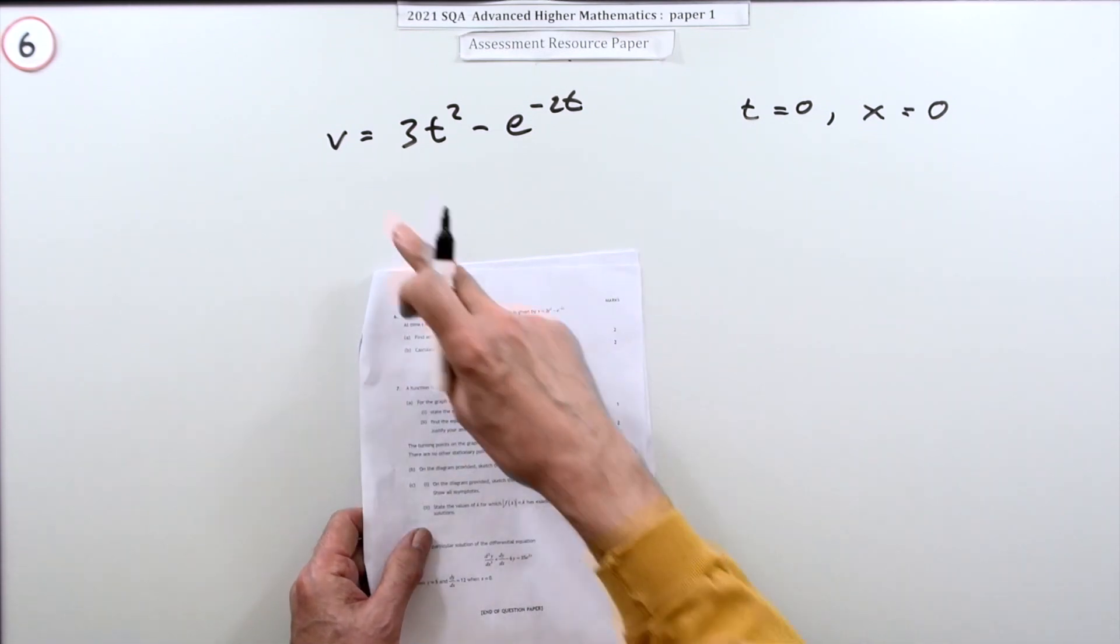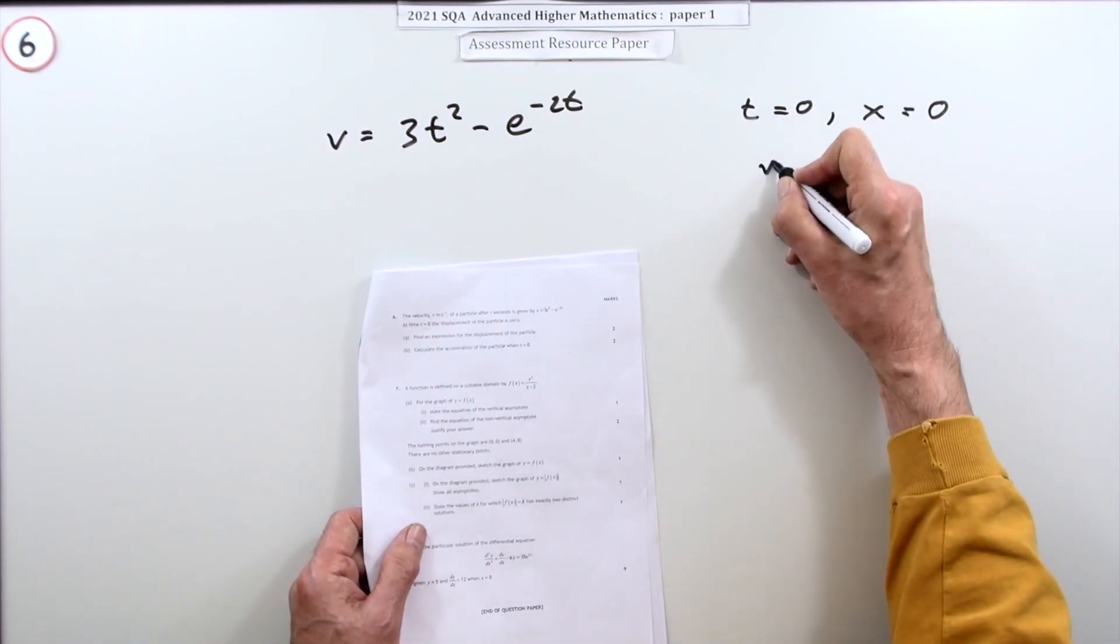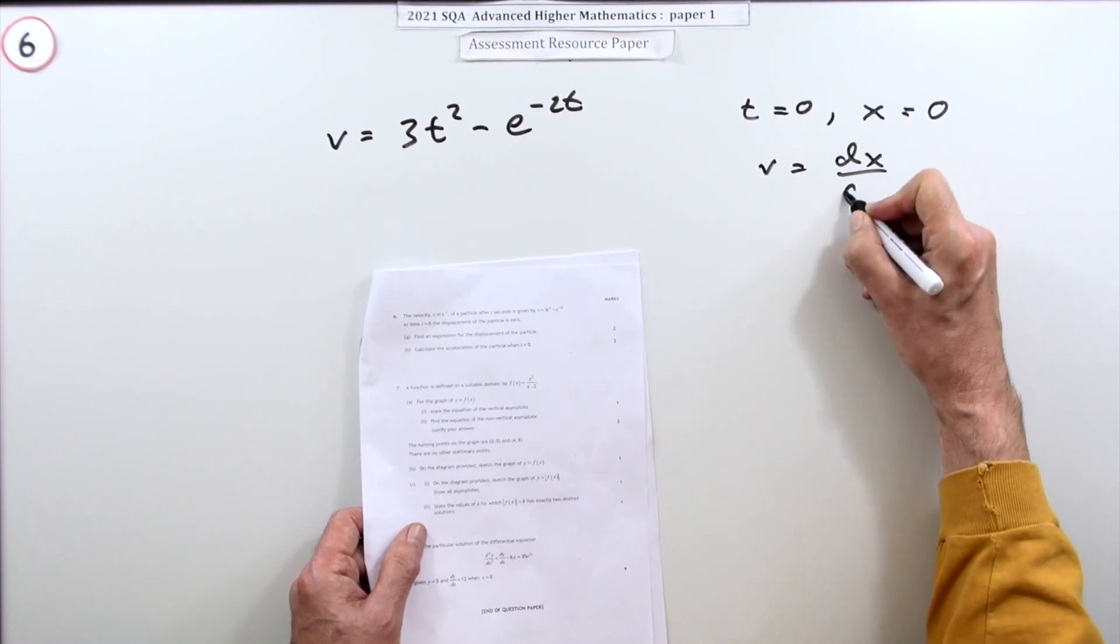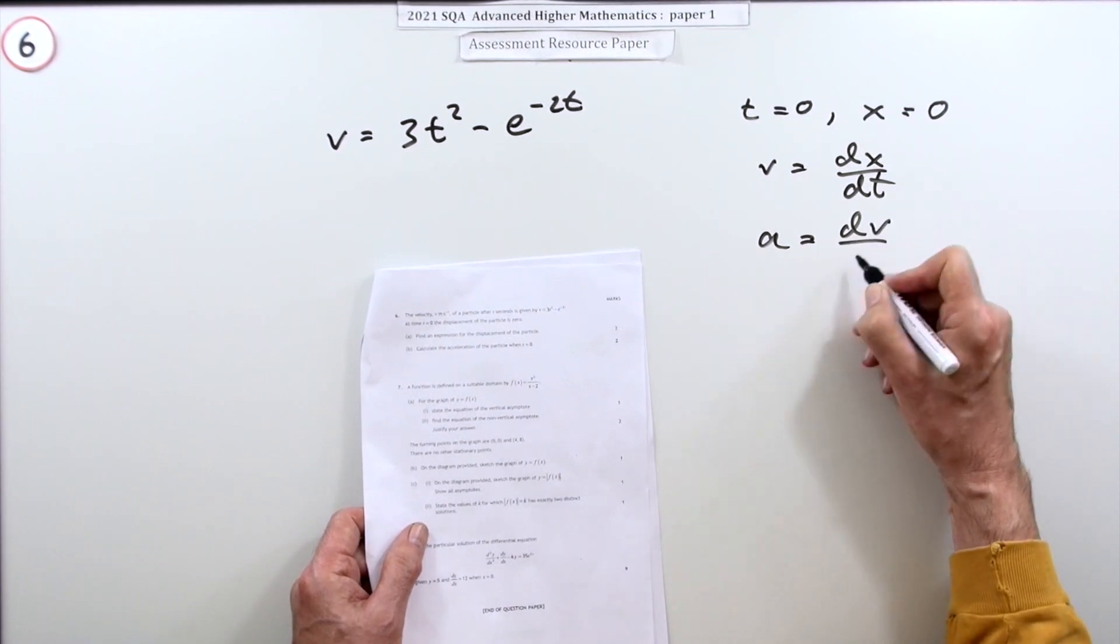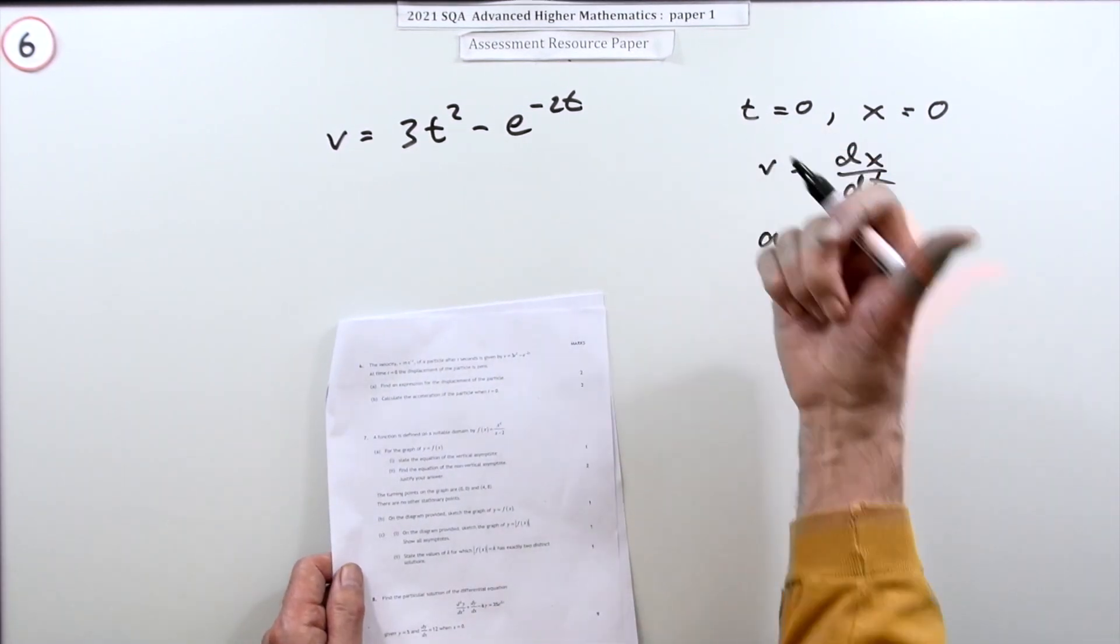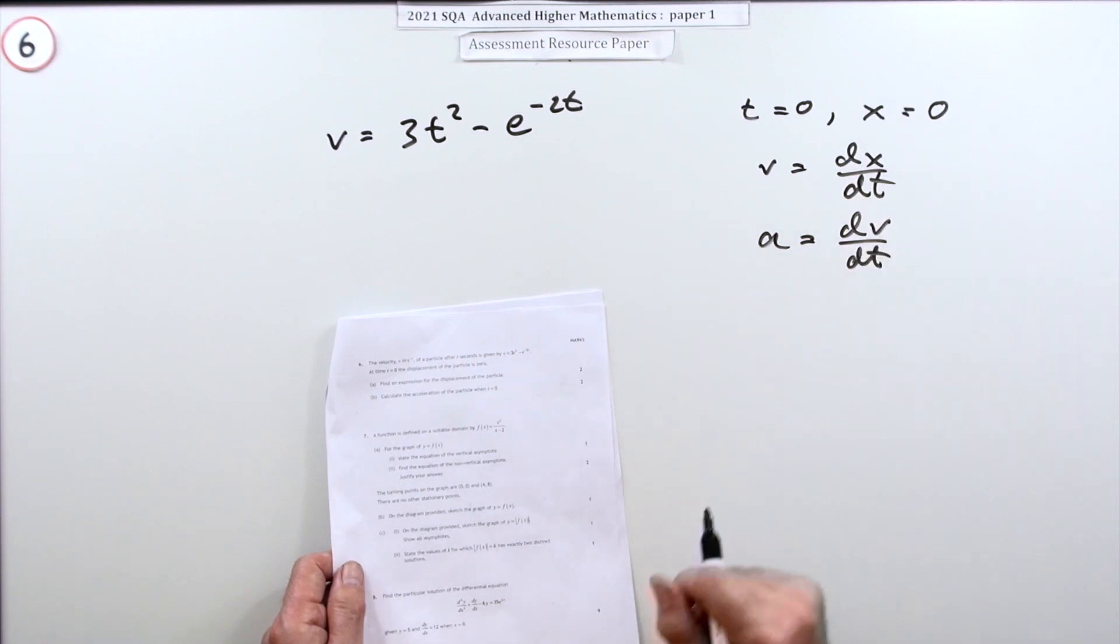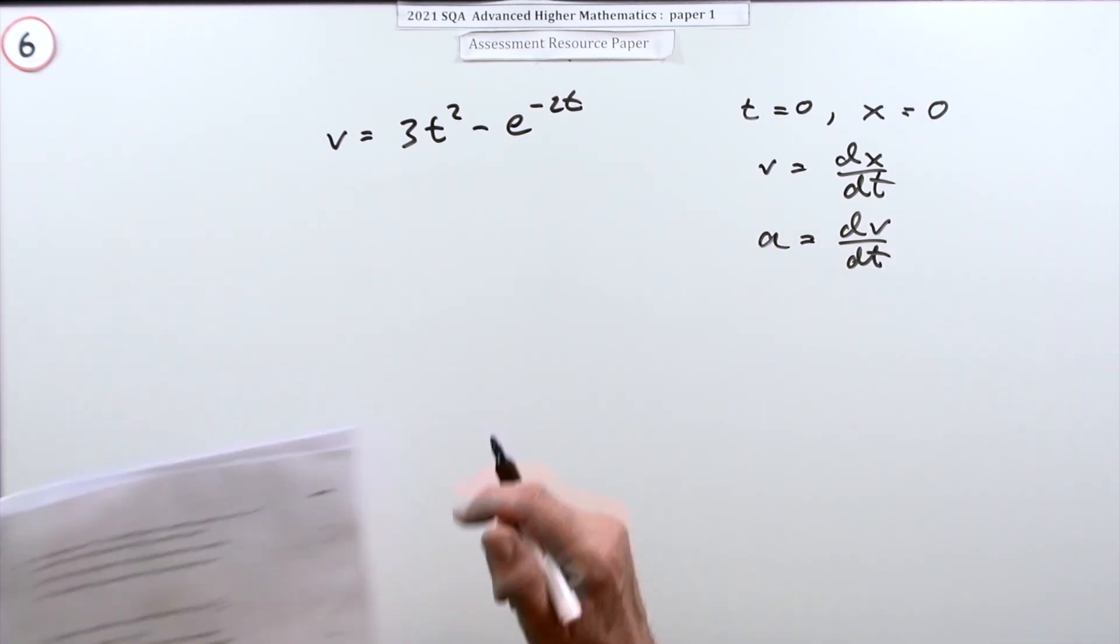These are all connected because velocity is the rate of change of displacement, and acceleration is the rate of change of velocity. Going forward you would differentiate; going back you'd integrate. In part (a), you have to find an expression for the displacement.